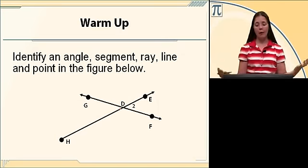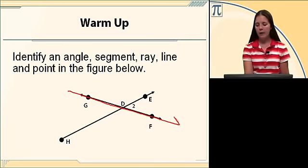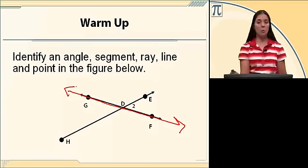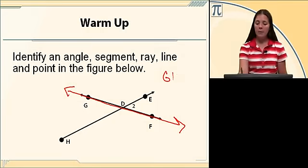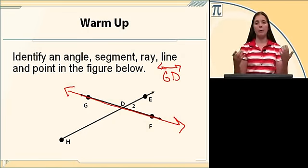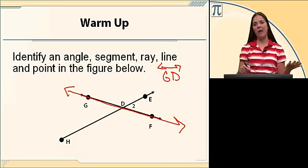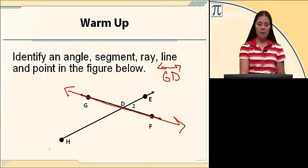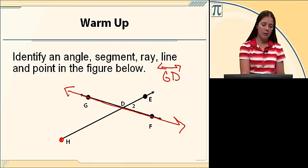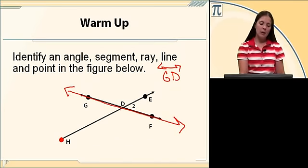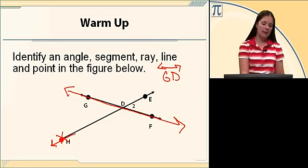Lines go in both directions forever. It doesn't matter which order you name the points in — you just need two points. There's one line in this drawing, and you can name it GD with a double arrow on top showing it goes both directions forever. You could name it DG, DF, FD, GF, or FG. The other item on this drawing is not a line because it has an endpoint — notice that it stops at H. So HD is not a line because it does not continue in both directions forever.